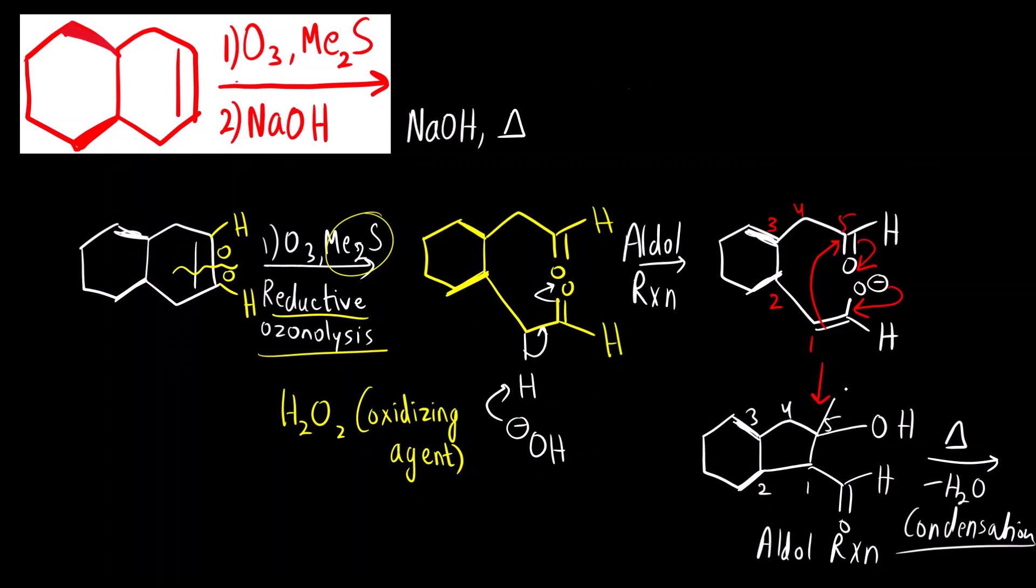What will happen is, here at the alpha position, this hydrogen is again acidic. What will happen? OH minus, it can abstract this proton. And we will get alpha, beta unsaturated aldehyde. That is the final product.